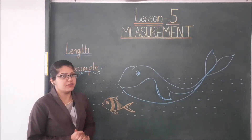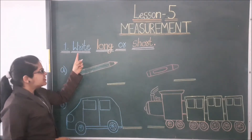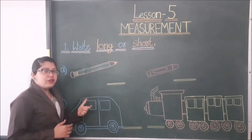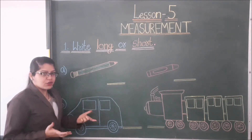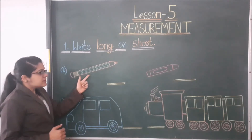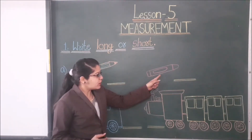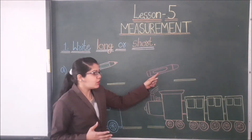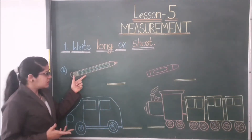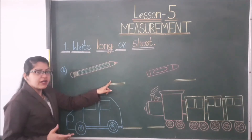Now students, let's start question number 1. The first question is: write 'long' or 'short'. Here pictures are given and we have to see if the picture is long or short. Let's see the first one — this is a pencil and this is a crayon. This pencil is long, so here we write 'long'.